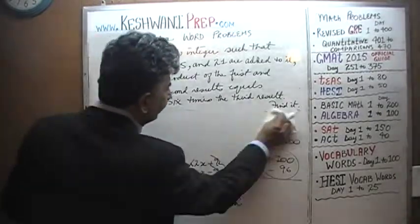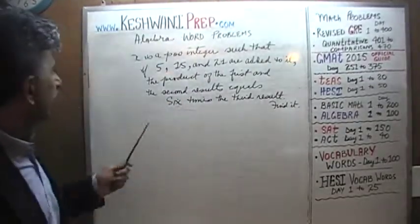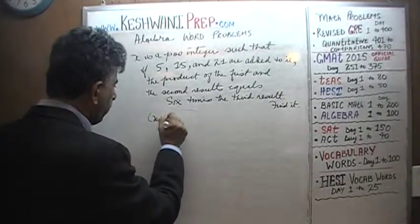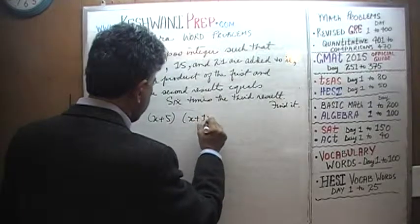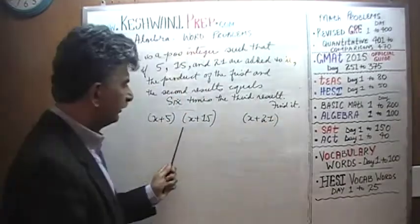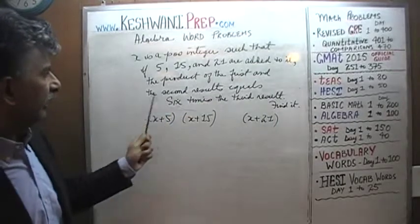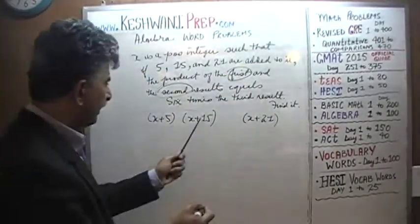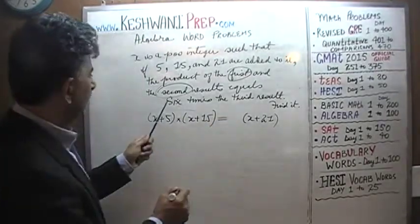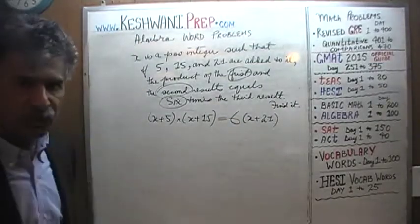So we are told we have a positive integer X, such that if 5, 15, and 21 are added to it, those are the three results we get. The product of the first and the second results has to equal six times the third result. Here is the first, here is the second, and six times the third quantity — that's all it is.